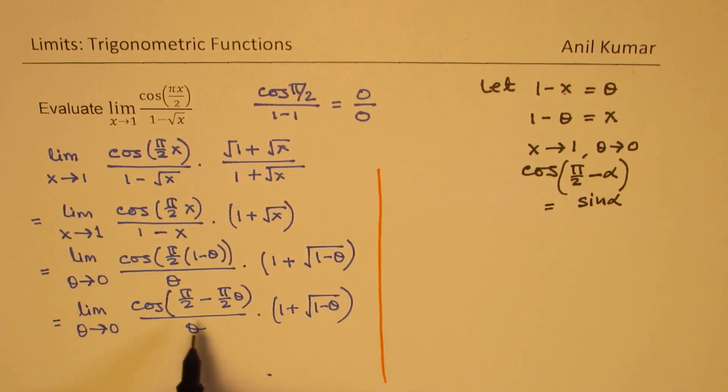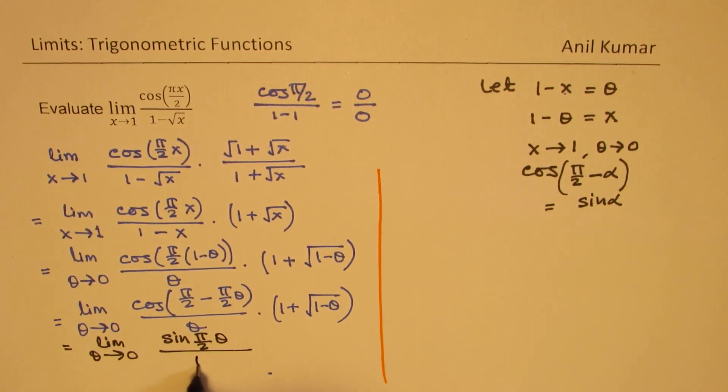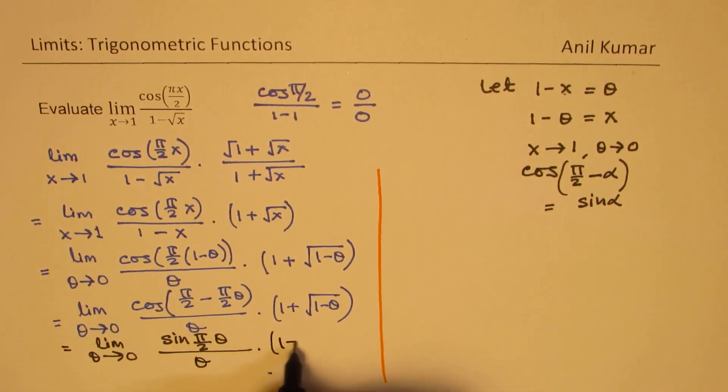And so we can now write this as limit theta approaches 0, sin(πθ/2) over theta times (1 plus square root of (1-θ)).